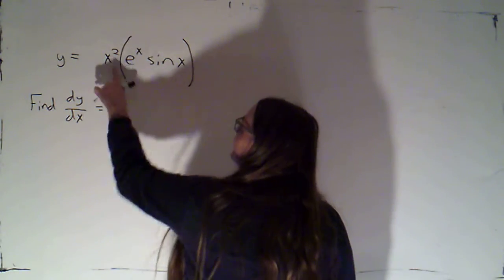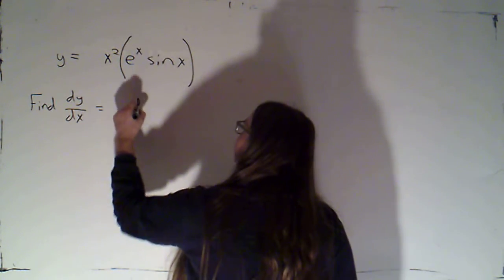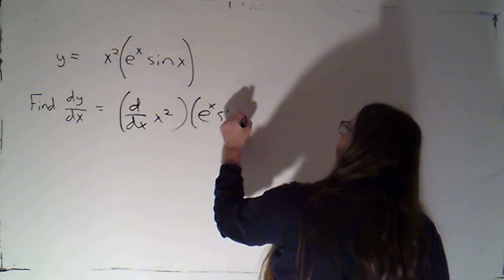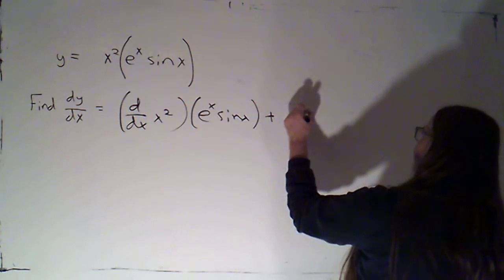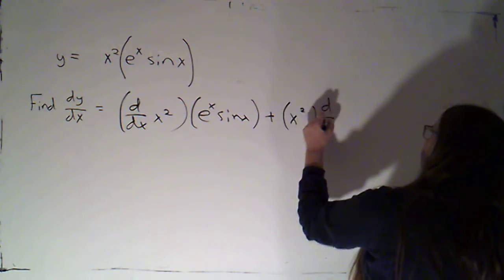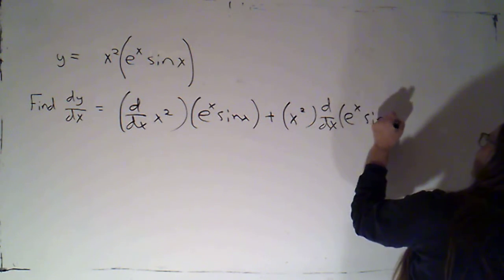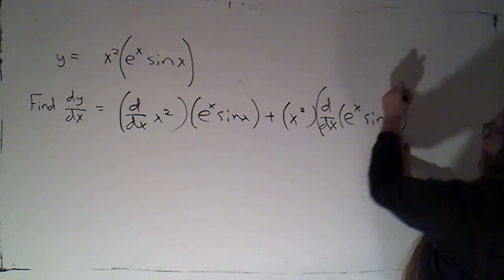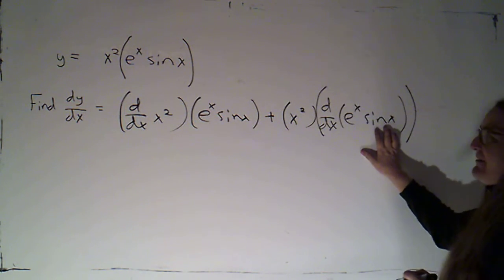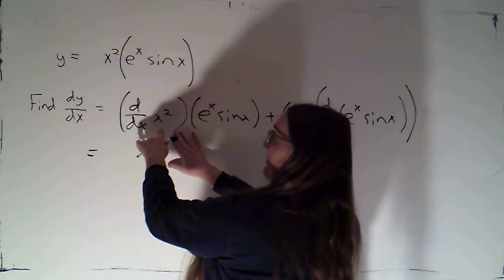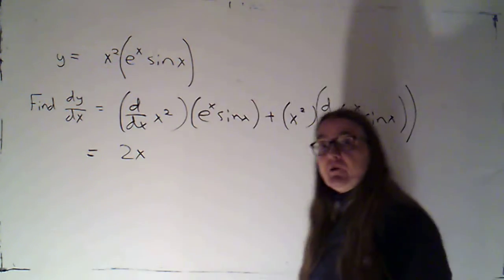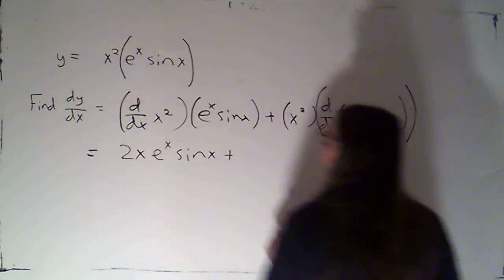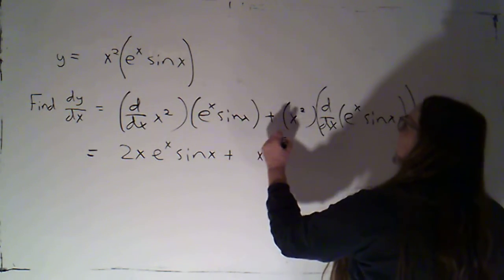All right, using product rule for this first piece I would say, okay, it's the derivative of x squared times e to the x sine x plus the first factor of x squared times the derivative of e to the x sine x. Now when I come back to evaluate this derivative I'm going to be using product rule a second time. All right, coming here the derivative of x squared I can evaluate that just using power rule—that's 2x—and then that's multiplied by e to the x sine x plus x squared brackets.